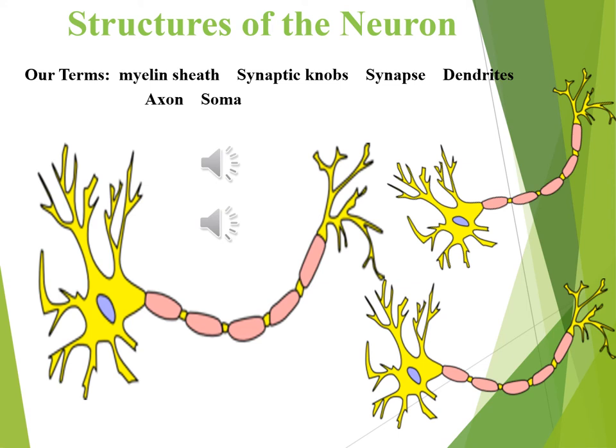Make sure you could draw and label this neuron if asked on a test — I have often put a drawing question on each test. Sometimes drawing a silhouette of the human body and labeling the glands, sometimes drawing a neuron and labeling the parts.